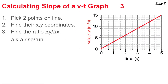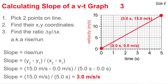Here's our last example. Again, pick two points on the line — I picked the first and the last. Their coordinates: the first point is (0, 0), and the upper-right point is 5 seconds and 15.0 m/s. Using slope equals change in y divided by change in x: 15 minus 0 for the numerator and 5 minus 0 for the denominator gives 15 m/s divided by 5 seconds, which equals 3.0 meters per second per second.